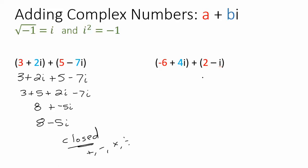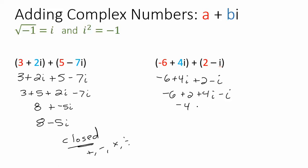Maybe you want to try the addition practice problem. Pause the video and give it a try, then start the video when you're ready. So pretty simply here, we're just going to remove the parentheses, which we can do with addition. Combine like terms and we get the complex number negative 4 plus 3i. That's addition.